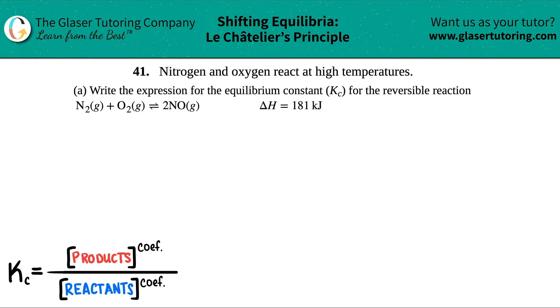Number 41. Nitrogen and oxygen react at high temperatures. And then we have letter A. Write the expression for the equilibrium constant Kc for the reversible reaction. And then we have this balanced equation over here.